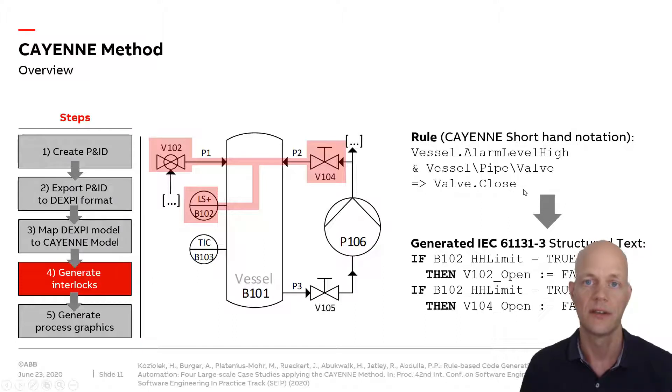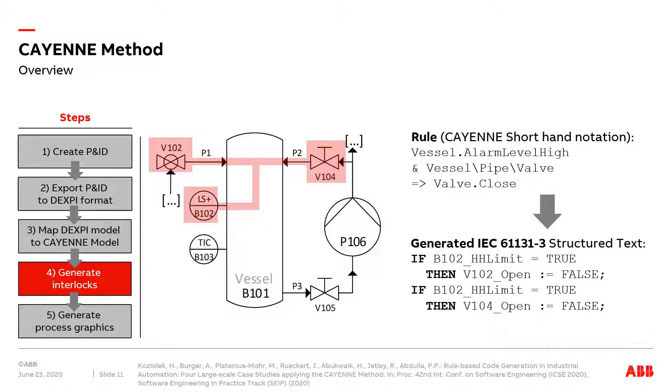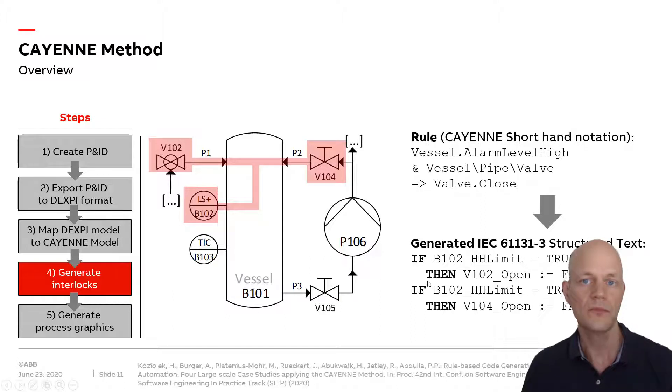From this information, we can directly generate IEC 61131-3 structured text, which is a standardized notation for control algorithms. It's very similar to Pascal source code. If the level sensor signal B102 issues a high limit that's true, then we issue an open signal reset to false for valve 102 and valve 104. We have more than 90 rules currently in the rule base which can generate structured text.